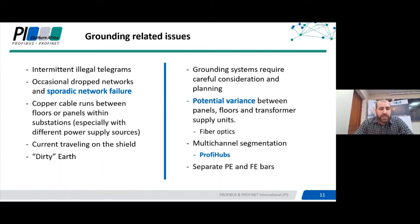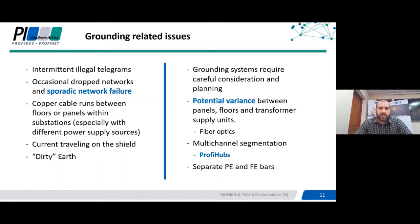Another fix found extremely useful where you have grounding related issues, rather than an expensive redesign of the whole grounding system, is in some cases you can use multi-channel segmentation using something like a Profibus hub, which has multiple channels and allows you to create a star topology. This makes devices on the network a lot more immune to these types of interferences. Obviously also utilize separate protective earth and functional earth bars.